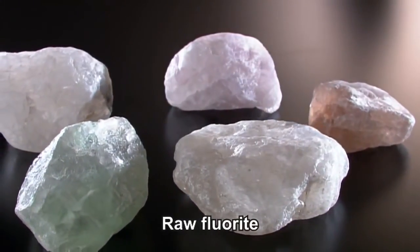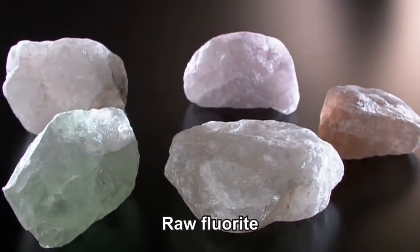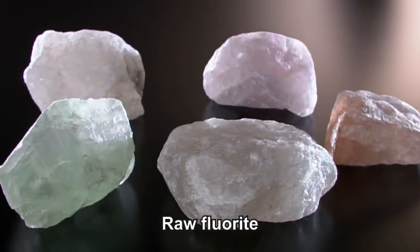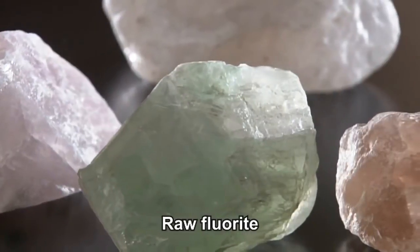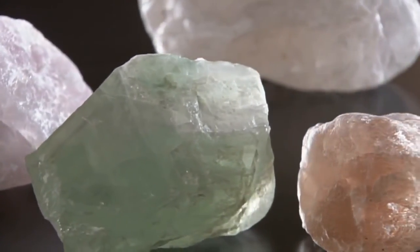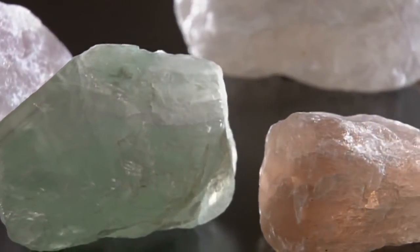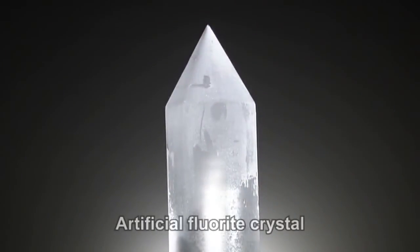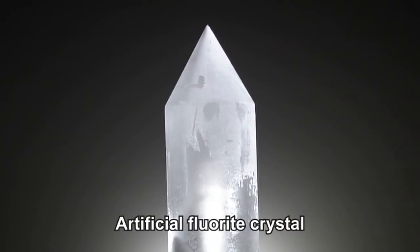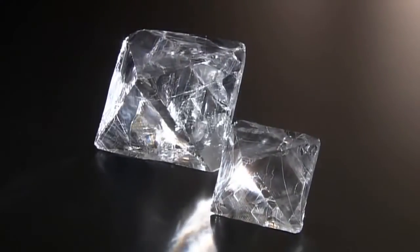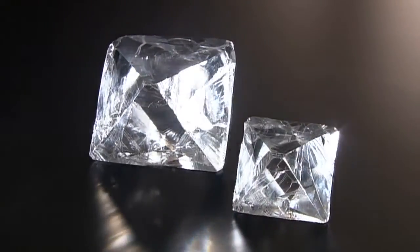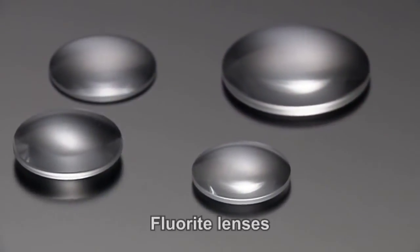Fluorite has gained attention as an ideal lens material because it is not susceptible to chromatic aberration, but there are problems with practical applications in terms of purity and size. Canon, however, succeeded in artificially creating large, high-purity crystals, and has already begun to mass-produce fluorite lenses.